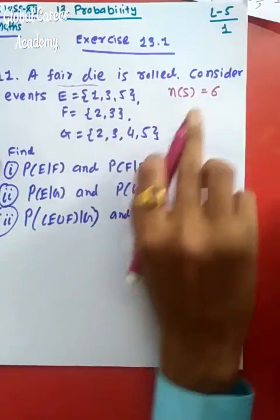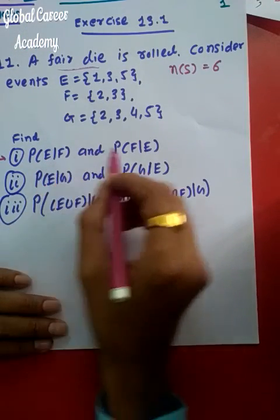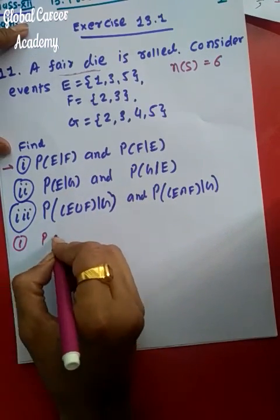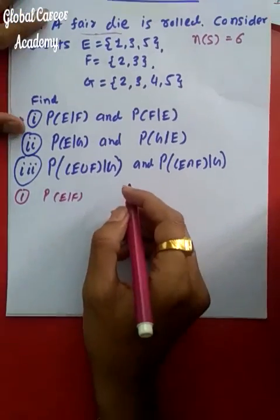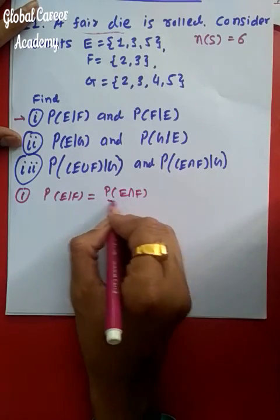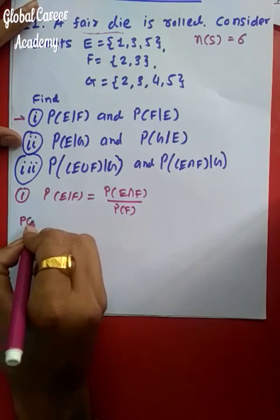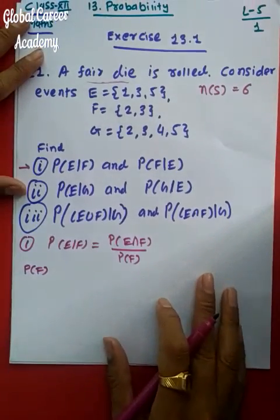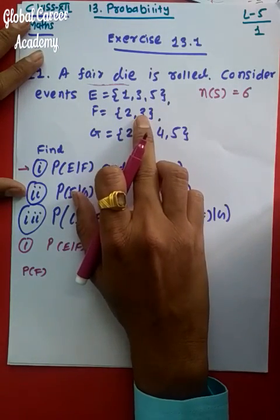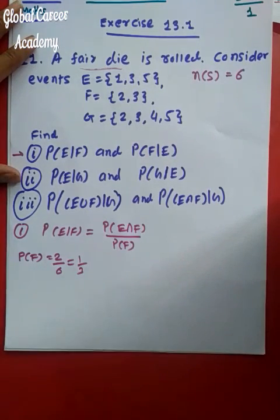First, we need to find probability of E given F and probability of F given E. For P(E|F), we write it as P(E∩F) divided by P(F). To find P(F), as you can see only two sample outputs are there out of six, so P(F) = 2/6 = 1/3.